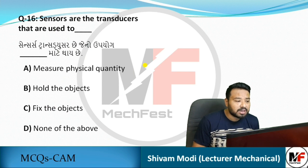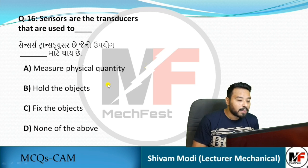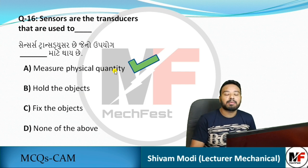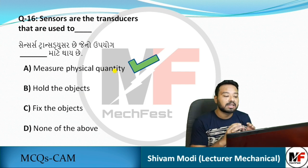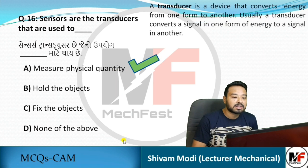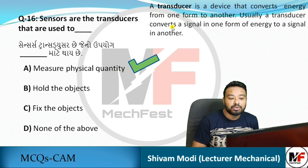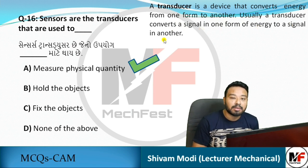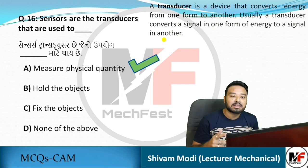Next question: sensors are transducers used for sensing. A transducer converts a physical quantity like motion into an electrical signal. The main function of a transducer is converting energy from one form to another — usually converting a signal in one form of energy to a signal in another form. The output is always an electrical signal.